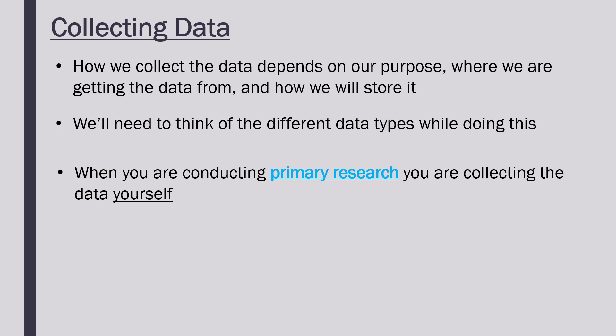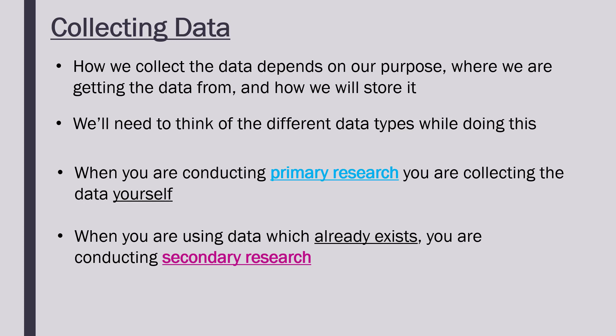Primary research means you are actually going out there giving surveys out, putting a sensor and collecting data that way. In contrast, secondary research is where we are using data which already exists — someone else had collected it already and we're just getting it from them. So primary research is fresh data you're collecting yourself, whereas secondary is data that already exists, collected by someone else.